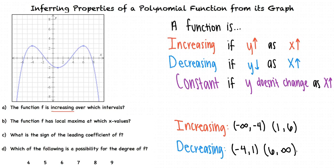Why do we write our intervals with parentheses instead of brackets? At the points identified on the graph, the function is neither increasing nor decreasing. These are the points where the graph changes from increasing to decreasing or vice versa. We can't include these points in the interval, and we must indicate this with parentheses.